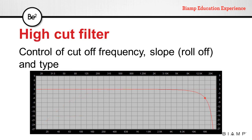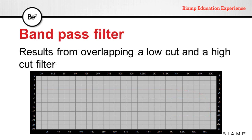High cut filters, on the other hand, will cut frequencies above a certain cutoff frequency. These filters can help reduce high frequency noise and hiss. If we combine a low cut filter and a high cut filter in such a way that they overlap, we get a band pass filter. These filters may be fixed or provide control of the cut frequencies and the slope, and are useful to limit signal bandwidth.